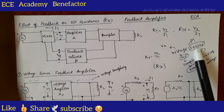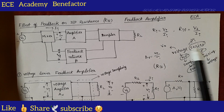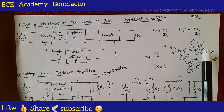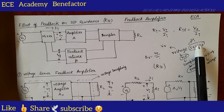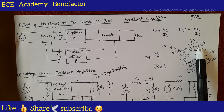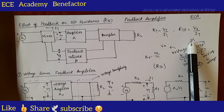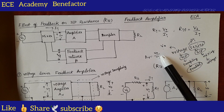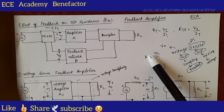Coming to the second word, series — this is about the input side. What type of mixing is done at the input side? Series mixing. For series mixing, we use a series connection. For voltage sampling with parallel connection and series mixing with series connection, the feedback parameter is voltage. For series mixing the voltage is V i. If you take the ratio of output by input, V naught by V i, it is known as voltage gain. So the basic amplifier is a voltage amplifier.